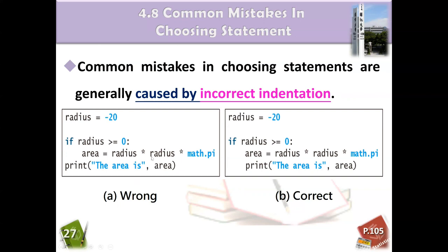For example, we can see figure A and figure B. What is the difference? Obviously, the print here is aligned to if, and the print here belongs to if, meaning when the if expression is true, then we will print. Otherwise, we don't print. But while it is wrong, this is correct. What is the difference? Please pay attention. When I give you the radius is minus 20, and if radius is larger and equal to zero, then we will compute the area. But the print has to align the statement.